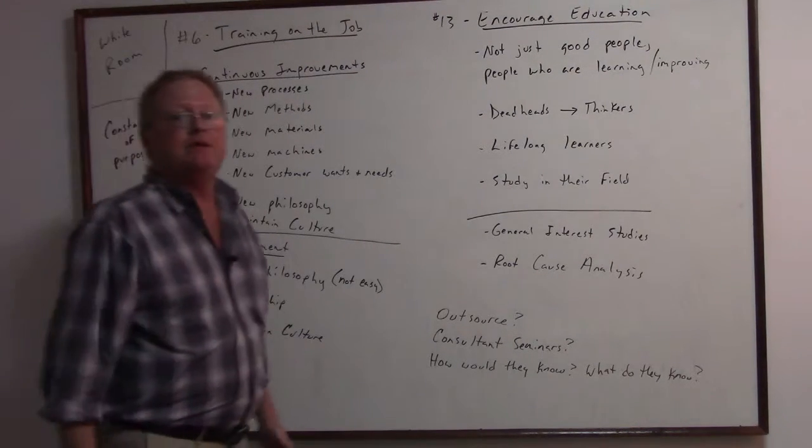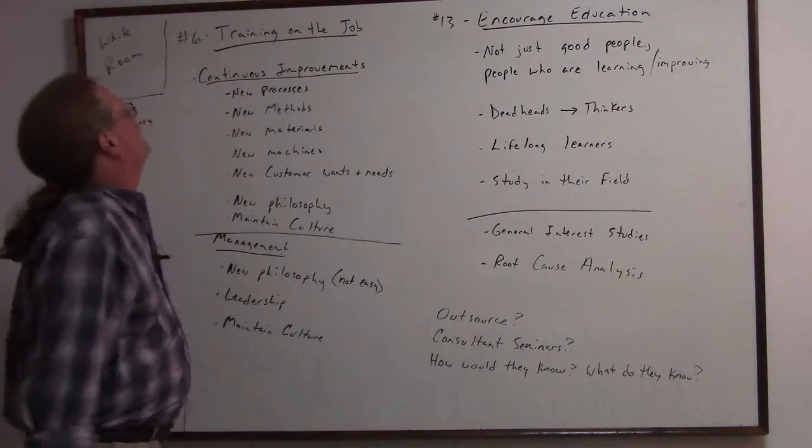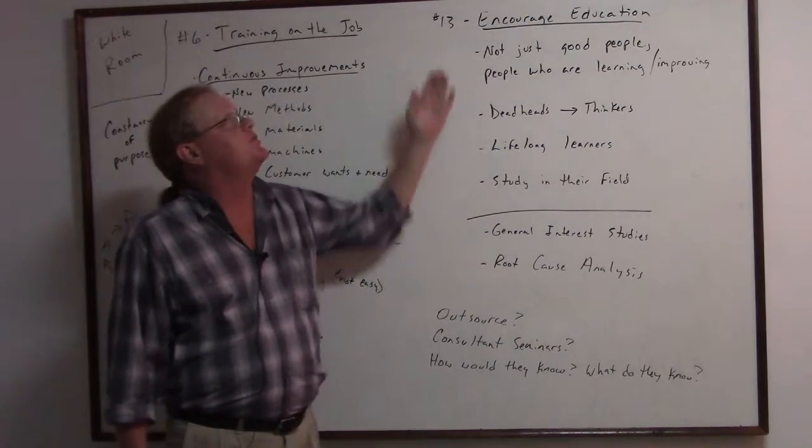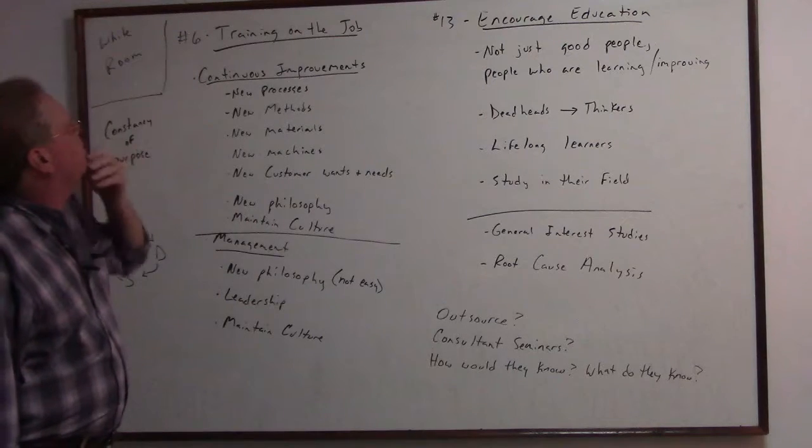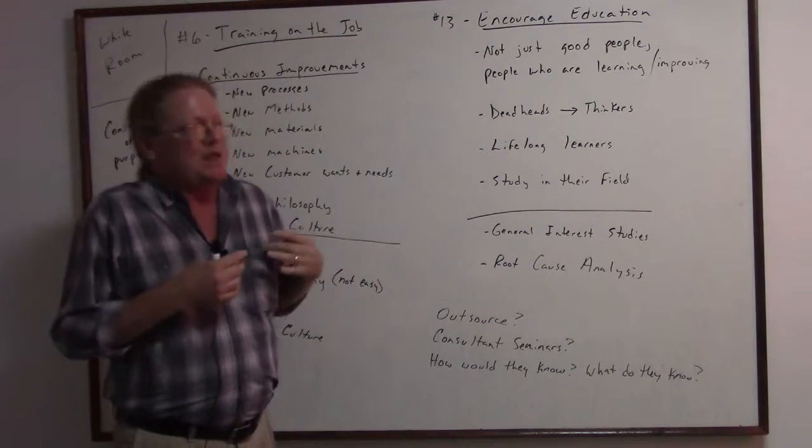All right, next up for Deming in the 14-15 principles of management we have number six, training on the job, and number 13, encourage education. Point number six, training on the job, is important to Deming. You might not think it's that necessary, but when you're in a state of continuous improvement things are supposed to be changing.